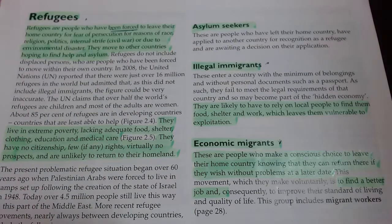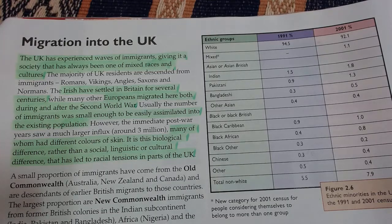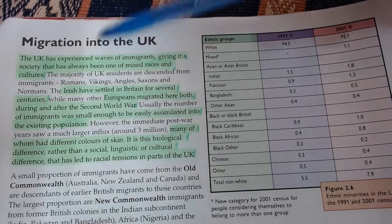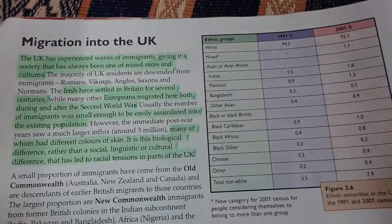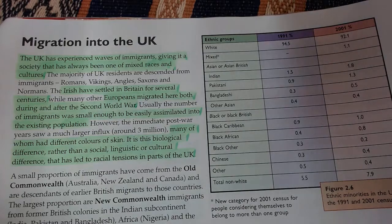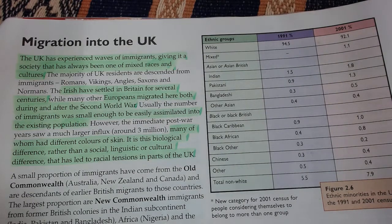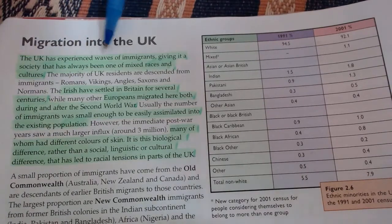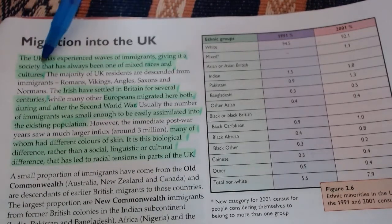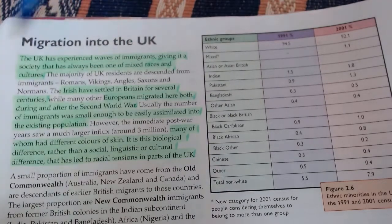On to page 24 — migration into the UK. This book is geared towards the UK, so it goes through a couple of different things and starts to touch on what we'll look at in our next lesson: the impacts of migration. Migration is always in the news — it's a very current affairs topic and a very interesting one. Movement is so easy now, you can move to countries so easily, it's becoming a very hot topic. The UK in particular has experienced waves of immigrants.